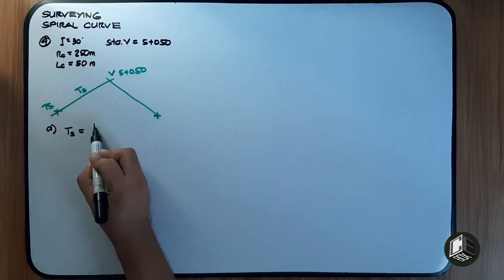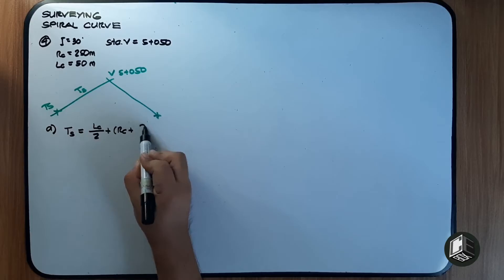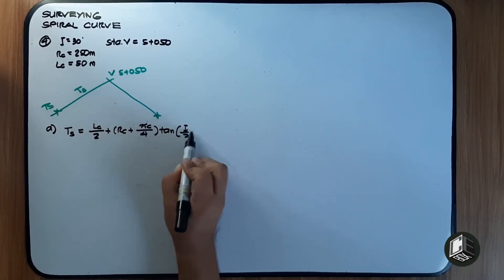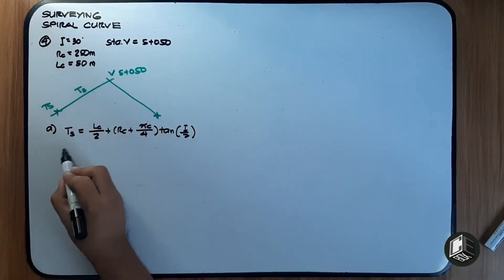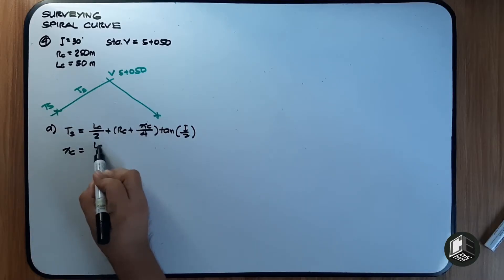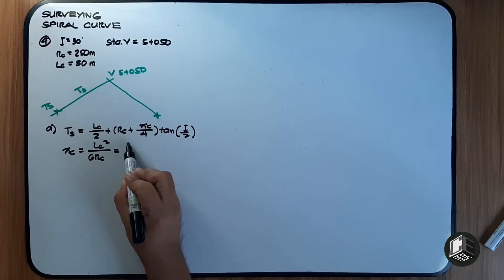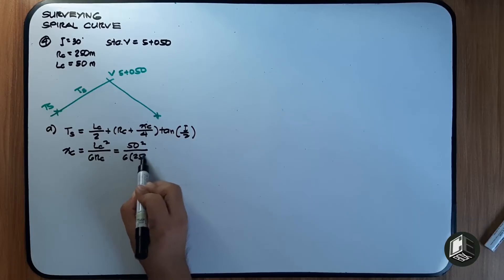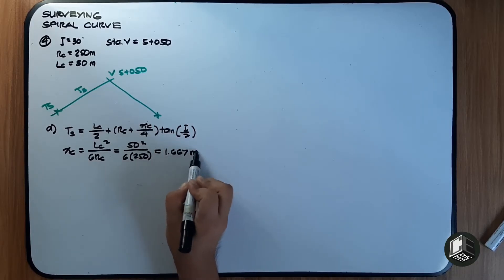To find T sub S, the formula is: LC over 2, plus RC plus XC over 4, multiplied by tangent of I over 2. First, let us find XC: XC equals LC squared over 6RC, which is 50 squared over 6 multiplied by 250. Therefore XC is 1.667 meters.